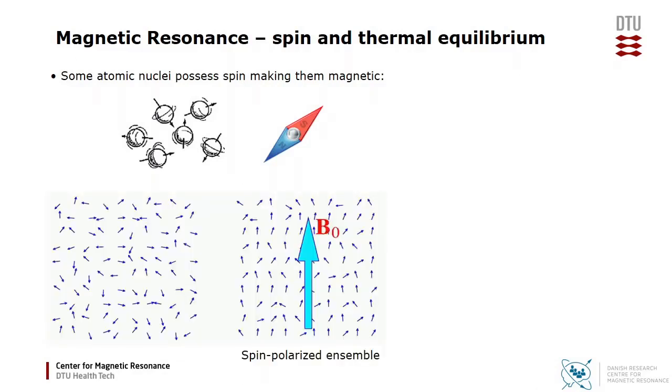For example, the protons are magnetic, and if you place them in a strong magnetic field B0, then you will get a certain degree of alignment, and therefore a spin polarized sample.